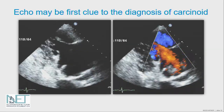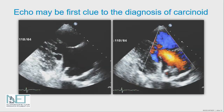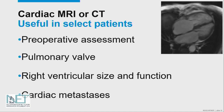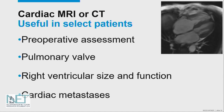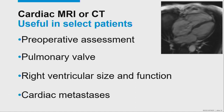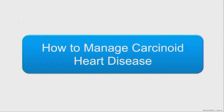It's worthwhile mentioning that echocardiography — ultrasound tests of the heart — can be the first clue to the diagnosis of carcinoid heart disease. Other tests can also be quite helpful. MRI or CT are frequently used, either as preoperative assessment or if we have challenges visualizing certain parts of the heart, the pulmonary valve for example, or we need a better assessment of right heart size or function, or to look for tumors in the heart. But echocardiography is the main key to the diagnosis.